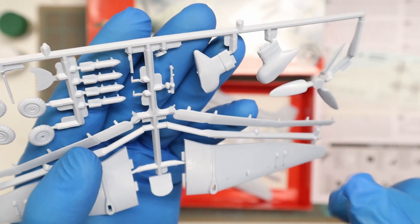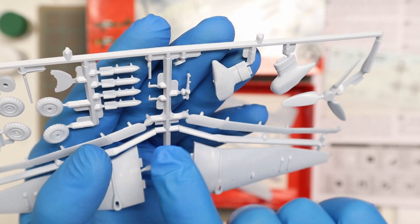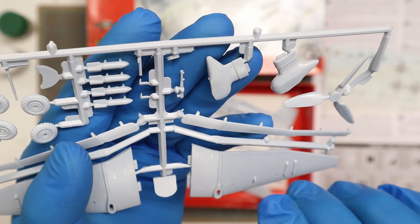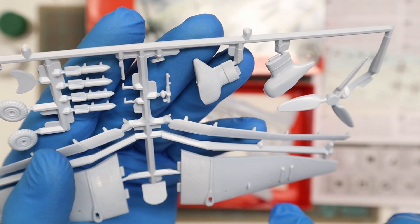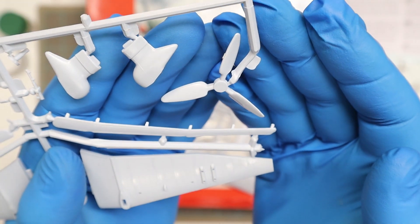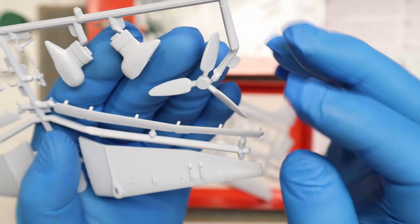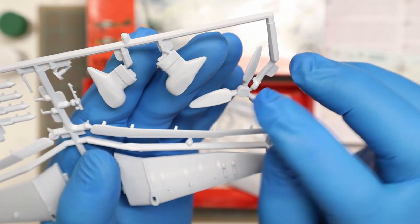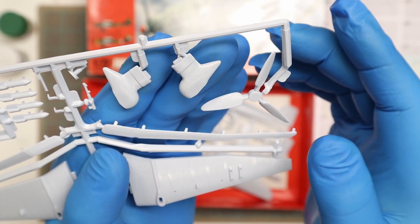I don't know why they went with the raised panel lines as this is a model made in 2010. Usually they're recessed panel lines and rivets, just makes it easier to detail. Looking at the propeller, it's very basic, it's clunky, it's chunky, doesn't look like it's got any detail on it, just a big piece of plastic.